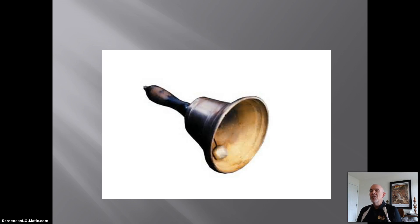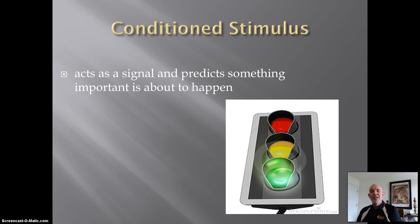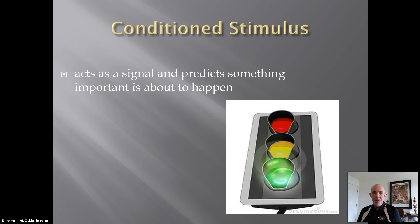Let's get back to the conditioned stimulus from Part 1. How does it acquire its power to make the dog salivate? As organisms, you and I have a need to predict the future. Pavlov discovered that if the bell is sounded shortly before the unconditioned stimulus of food, it predicts and signals the occurrence of food, and that's useful to know. The body begins to salivate as if it's been given a heads up that food is on the way. You would not get the same effect if the bell was rung after the presentation of food, because it doesn't predict anything then.